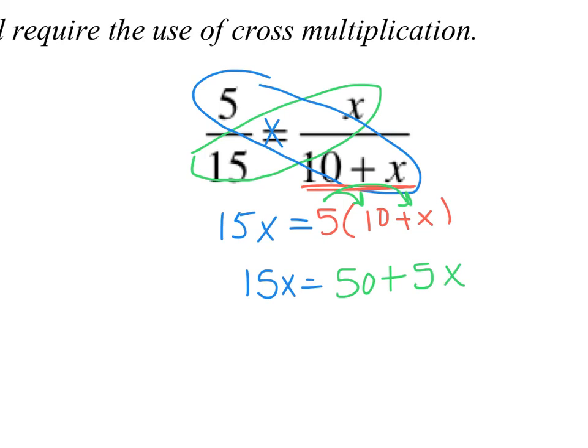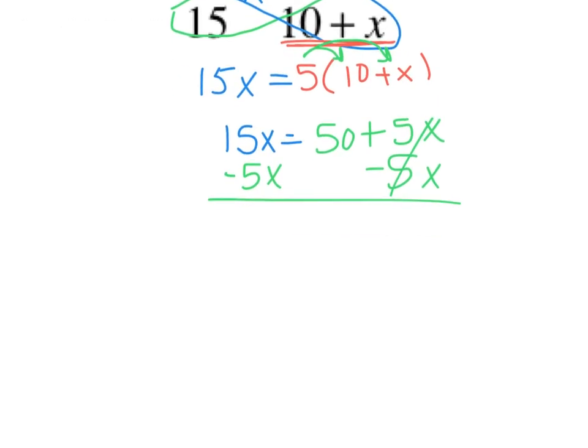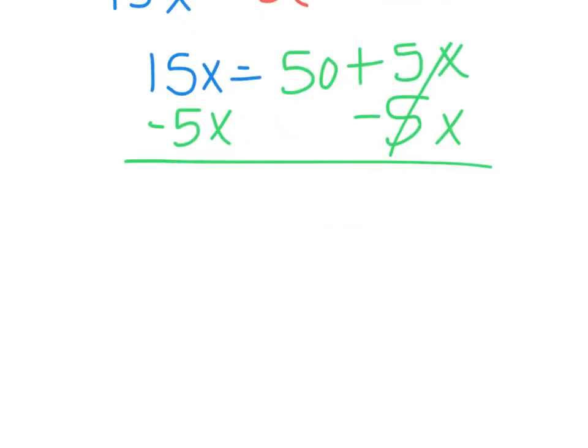We want all of our variables on the left-hand side of our equals. So to get rid of that positive 5x, I'm going to subtract 5x. Subtract 5x. My 5x is canceled. And I get, let's see, 15x minus 5x is 10x.